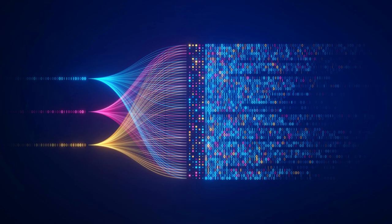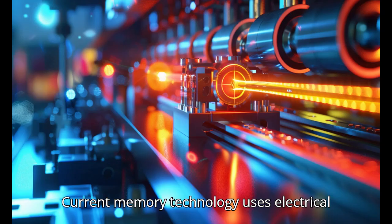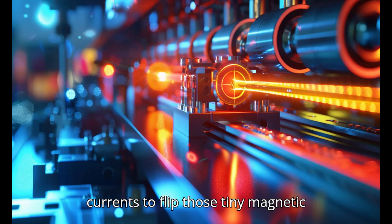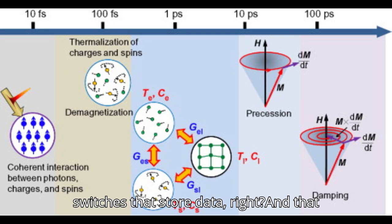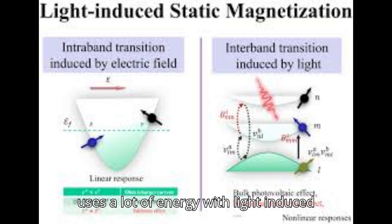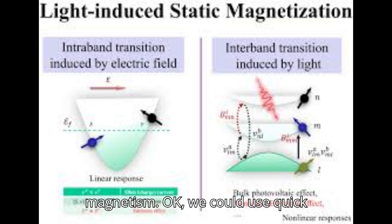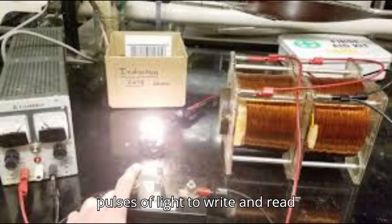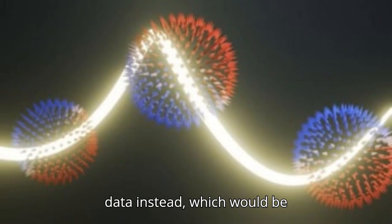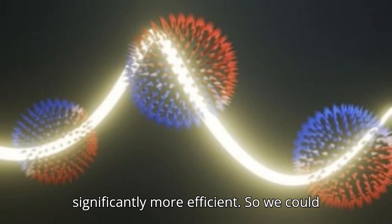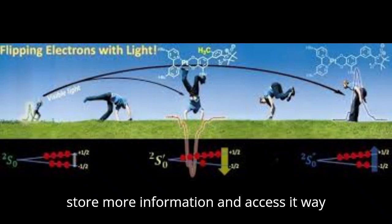Are we talking about a whole new type of memory chip then? Potentially yes. Think of it this way - current memory technology uses electrical currents to flip those tiny magnetic switches that store data, and that uses a lot of energy. With light induced magnetism, we could use quick pulses of light to write and read data instead, which would be significantly more efficient.